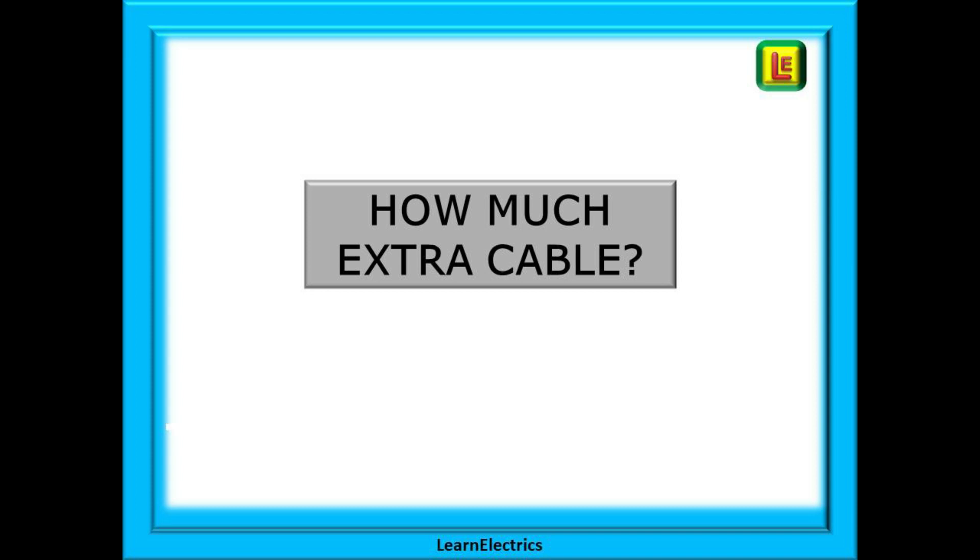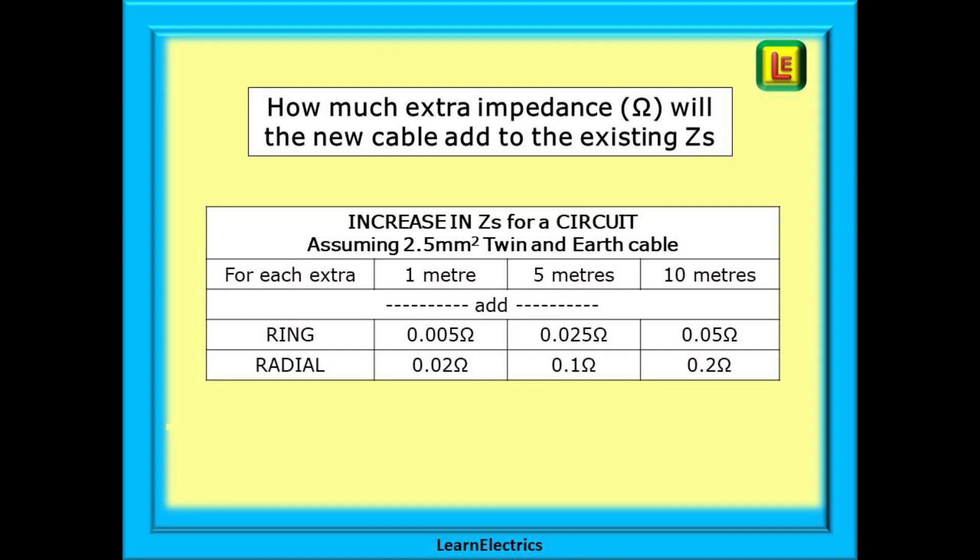It is extremely useful, essential really, to know about just how much a circuit can be extended before starting the work. We should not simply hope and pray that things will be okay that the ZS will be low enough and leave everything to chance. It would be nice to have a method whereby we can determine just how much extra cable we can add. If we need to add 10 meters and the calculation tells us that we can go to 15 meters then happy days. But if the numbers tell us we cannot exceed 5 meters when we need 10 meters isn't it better to know that before we start to knock holes in walls. This little table will show you how much extra impedance or resistance a length of cable will add to a circuit's measured ZS. It is all based on 2.5 millimeter twin and earth cable and the table should be self-explanatory and do notice that there are different values for ring and radial circuits. These values will need to be added to the existing ZS.